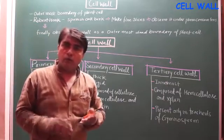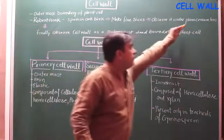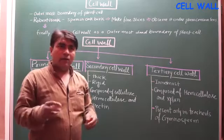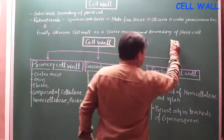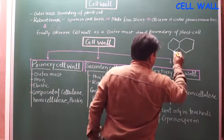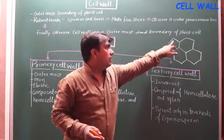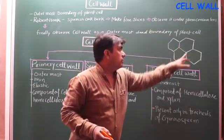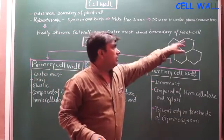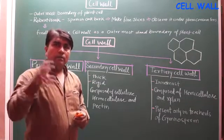He observed these fine slices of oak bark under a very crude microscope made up of planoconcave lenses. In this observation, he found out that a plant cell has an outermost boundary which he called the cell wall. He used the word 'cellar' for describing the compartment that basically forms the plant.